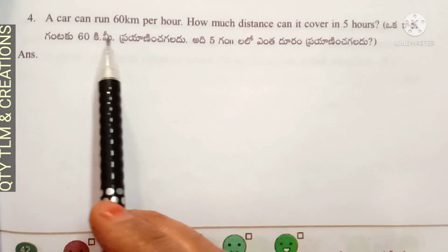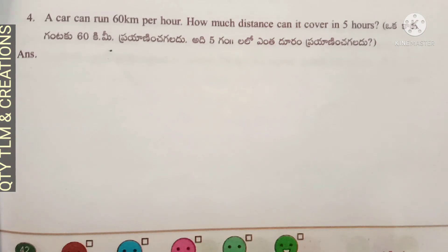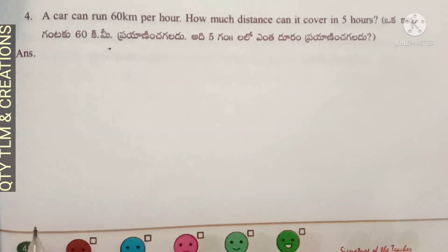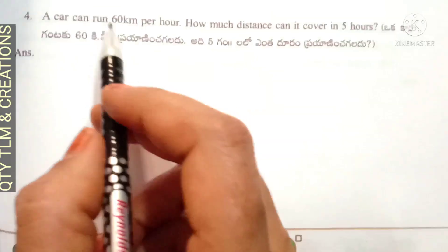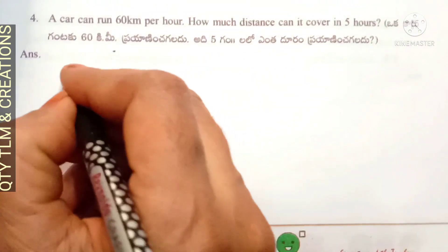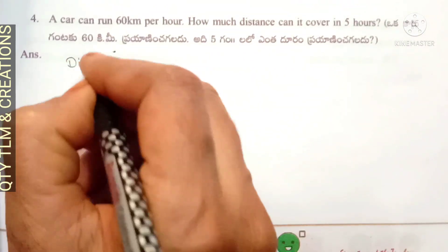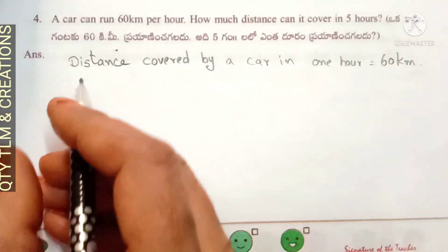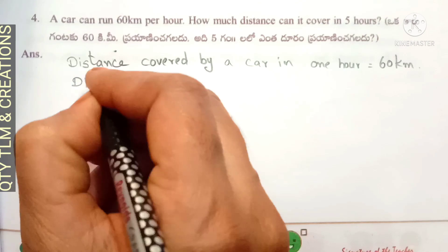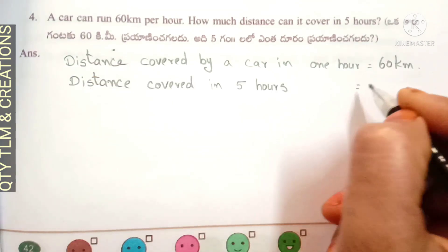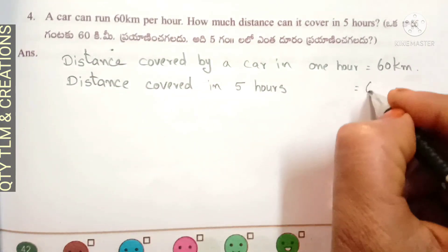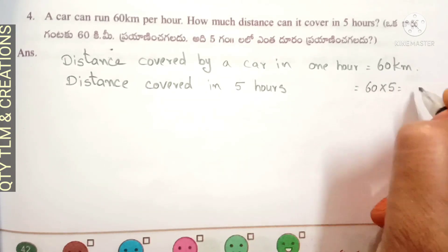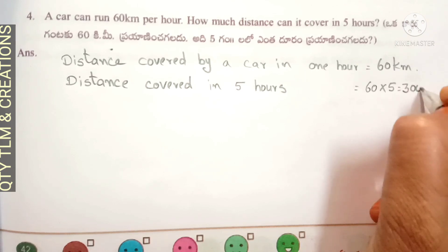Next question: a car can run 60 kilometers per hour. How much distance can it cover in 5 hours? Distance covered by a car in one hour is equal to 60 kilometers. Distance covered in 5 hours is equal to 60 kilometers into 5 hours, that is equal to 300 kilometers.